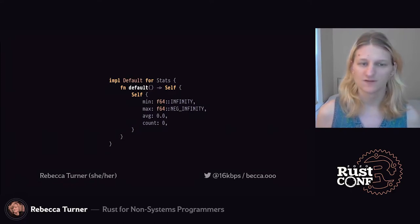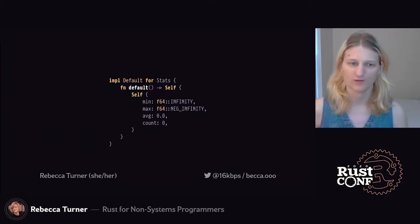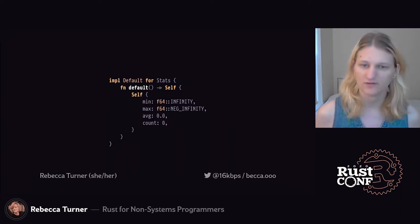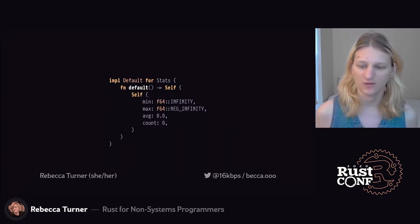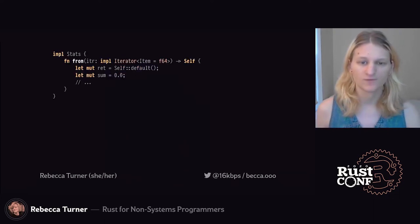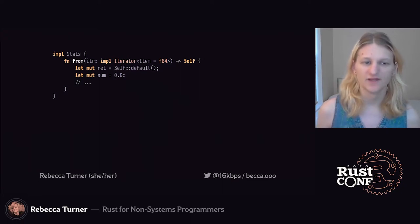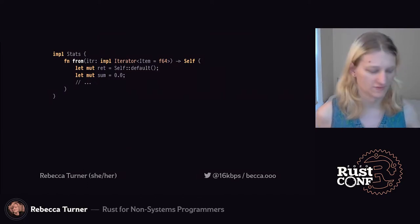We're picking infinity for the starting minimum value because every float is less than infinity, and negative infinity for max for the same reason. Note that we have associated constants even for our primitive types — in Rust, primitive types are treated just like any other type, as opposed to Java where we have to treat reference types and primitive types really differently. Now we can construct a `Stats` object from an iterator of floats. We start by initializing a mutable return value and a sum of the iterator's elements.